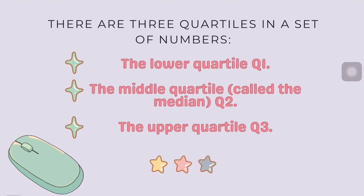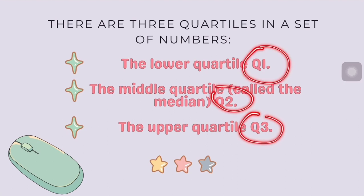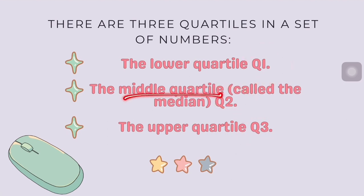There are three quartiles in a set of numbers. We have the lower quartile, or Q1, the middle quartile, or Q2, and the upper quartile, or Q3. The middle quartile is also called the median.